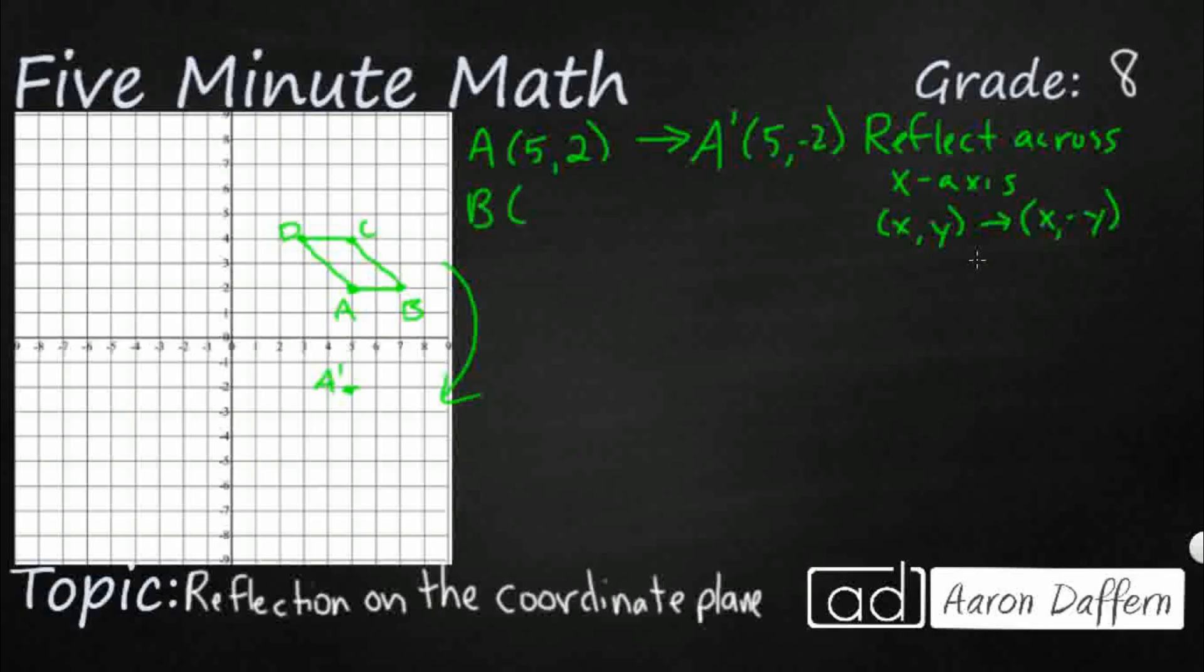And then so B is going to be, let's see what we've got, 7,2. So we're going to follow this rule here, B prime. We're going to keep our 7 the same, and we're going to change it to a negative y, so it becomes negative 2. So that's B prime. That's where that line is going to go.